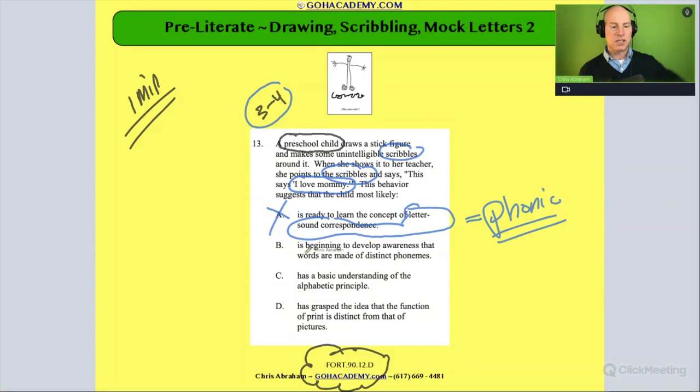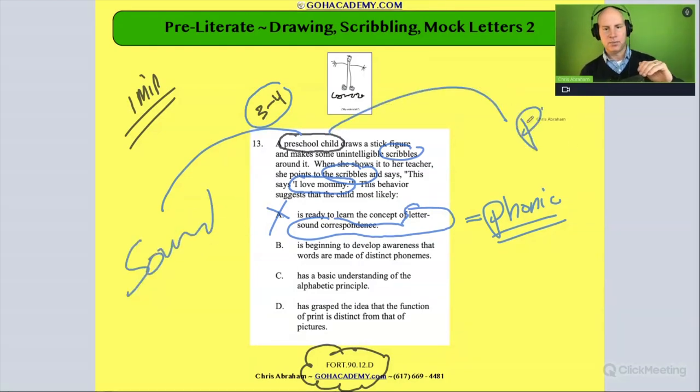How about this one right here? It's beginning to develop an awareness that words are made up of distinct phonemes. Well, it's possible, but this activity here, if we go back preschool, is it a sound thing or is it a print thing? Scribble. Whenever we see things like scribbles, that's scribbles is automatically a print thing.